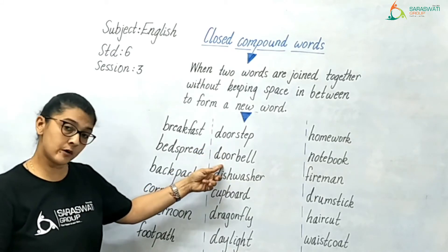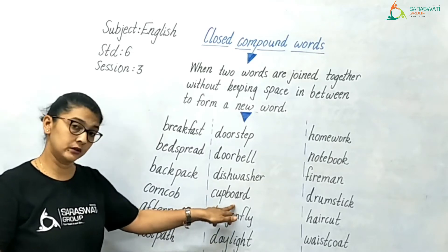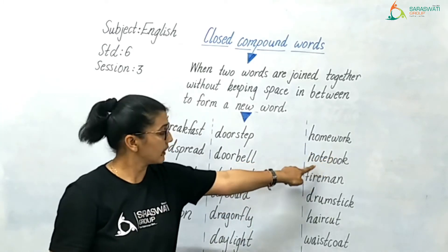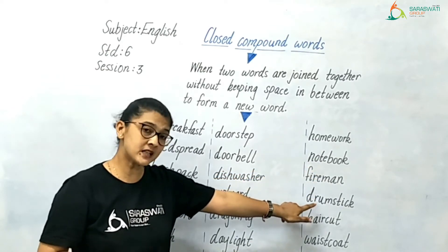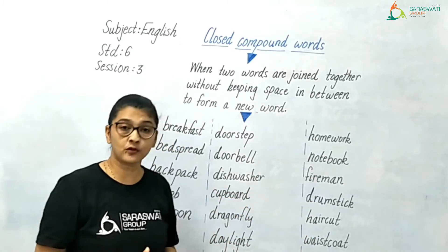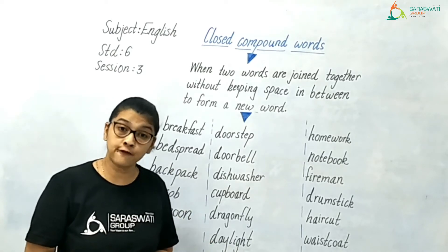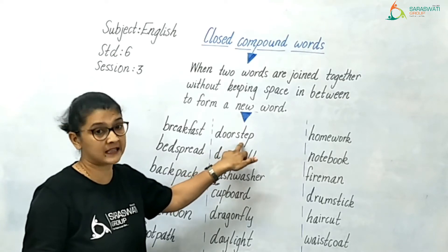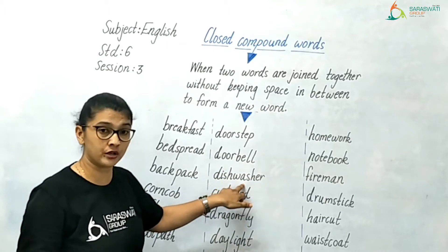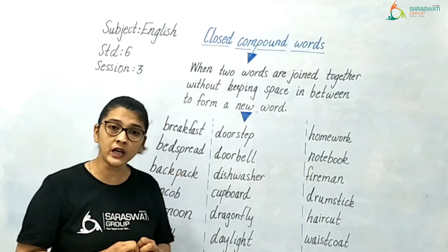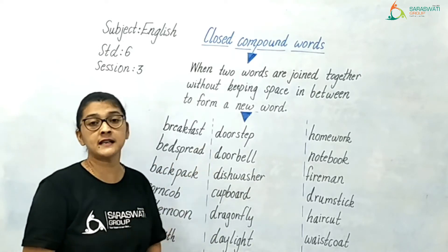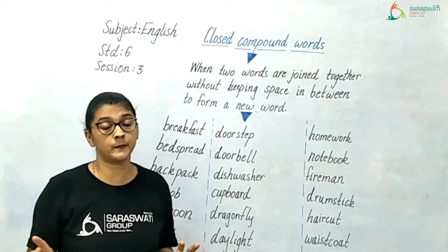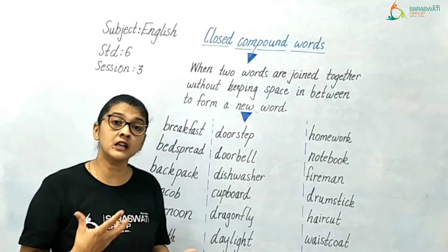Further examples of closed compound words include: doorstep, doorbell, dishwasher, dragonfly, daylight, homework, notebook, fireman, drumstick, haircut, and waistcoat. All of these are formed by joining two words without keeping any space in between, creating a different meaning. These are known as closed compound words.